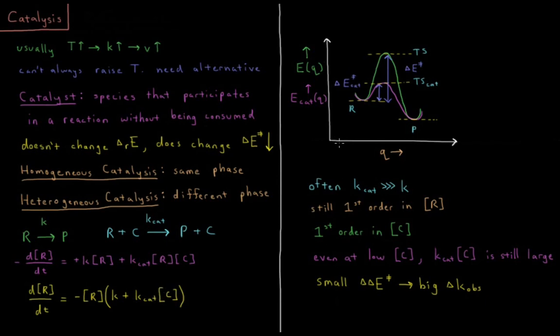So we'll look at a reaction coordinate diagram here, where we're going to look at the energy as a function of reaction coordinate for the uncatalyzed mechanism, and the energy as a function of reaction coordinate for the catalyzed mechanism. So note that in each case, the reactants and the products are at the same energy.